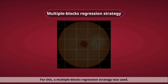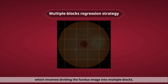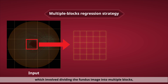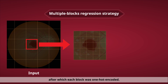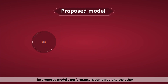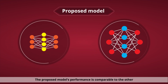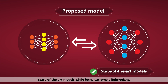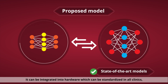For fovea localization, a multiple blocks regression strategy was used. This involved dividing the fundus image into multiple blocks, after which each block was one-hot encoded. The proposed model's performance is comparable to other state-of-the-art models while being extremely lightweight.